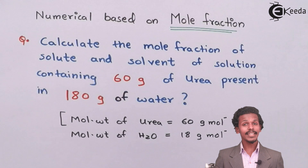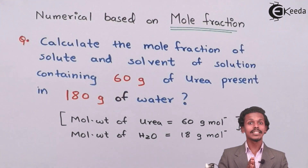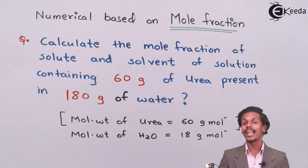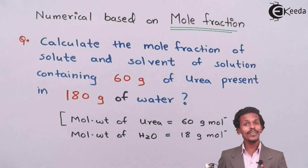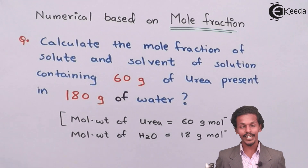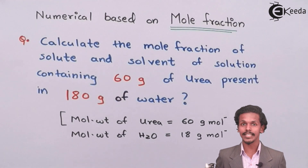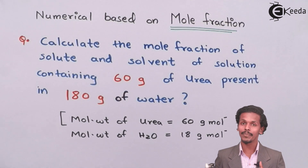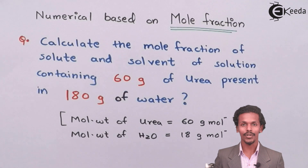We should consider what is the solute and what is the solvent. There are two values given in grams: 60 grams and 180 grams. Since 180 grams is more than 60 grams, 180 grams will be the solvent, which is nothing but water.